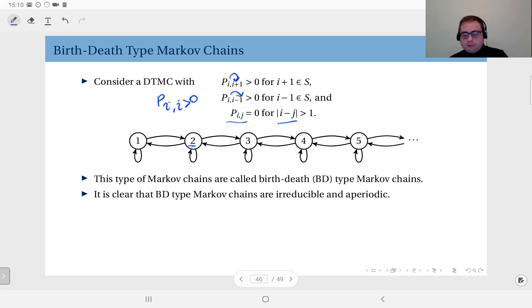These we call birth-death type Markov chains and these appear a lot in a wide variety of situations. These are quite useful because the solutions have nice forms. The balance equations have more simple forms than usual. A key observation is that birth-death type Markov chains are irreducible and aperiodic, because loops eliminate periodicity and you can reach every state from every state.